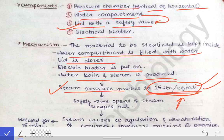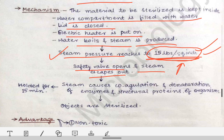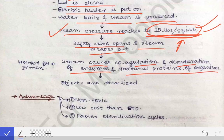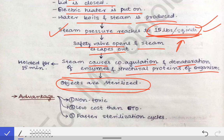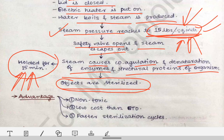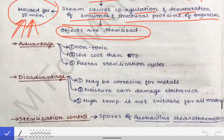When the pressure reaches 15 pounds per square inch, the safety valve opens and the steam escapes. Since that steam comes from very high pressure, it has very high penetrating power. As it escapes, it causes coagulation and denaturation of the enzymes and structural proteins of the organisms, thereby killing the organisms and sterilizing the objects. The object must be kept inside the autoclave for 15 minutes. So remember: 15 pounds per square inch pressure and 15 minutes exposure time — both are important.